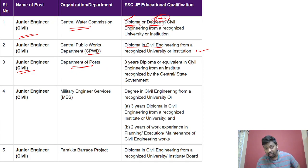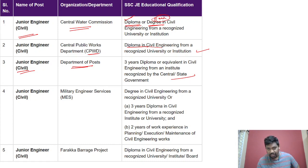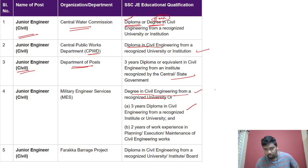3-year diploma equivalent in Civil Engineering from an institute recognized by Central Government or State Government. Degree in Civil Engineering from a recognized university. Also, 3-year diploma in civil engineering from a recognized institute or university, plus 2 years of work experience in planning, execution and maintenance of civil engineering works. B.Tech is eligible; diploma plus 2 years experience is also eligible.